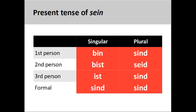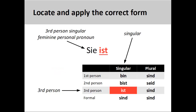Finally, the conjugation pattern for the strong verb sein, meaning 'to be,' is completely unpredictable and must be committed to memory. The sentence sie ist, meaning 'she is,' shows the correct third person conjugation.